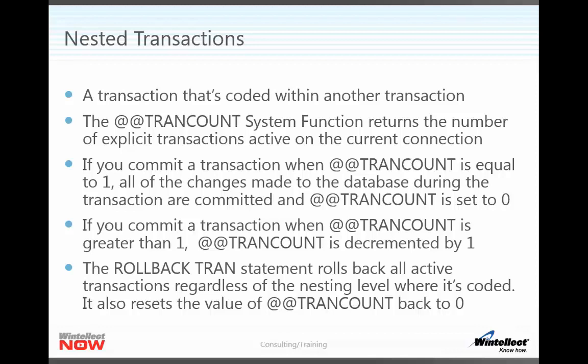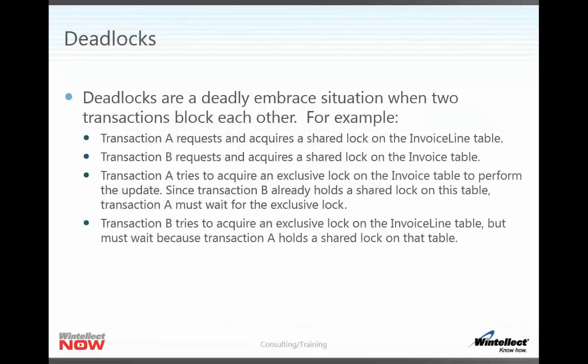Whenever you commit a transaction, the value returned by TRANCOUNT winds up being set equal to one because you're beginning one level of a transaction. All the changes that are made to the database during that transaction are committed once you do a commit — it'll basically reset TRANCOUNT back to zero. And whenever you issue another transaction within the scope of an existing transaction, that increments the nesting level.